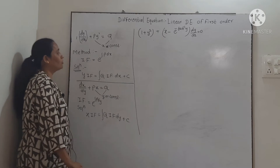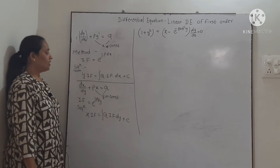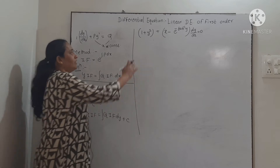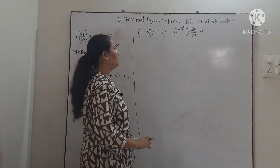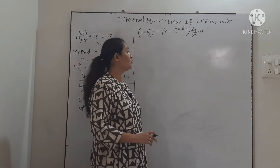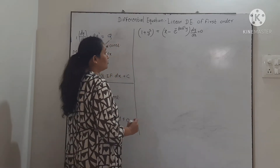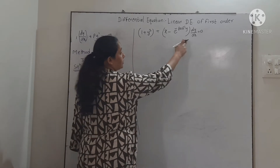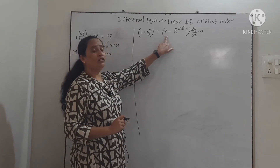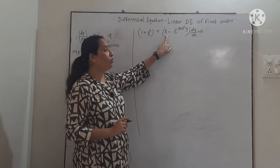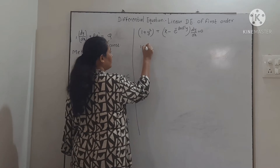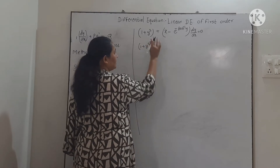This is the procedure to solve a linear differential equation. We will take one example. Consider (1 + y²) + (x − e^(−tan⁻¹y)) dy/dx = 0. Observing this equation, the highest power of x is 1, so we will try to convert this into linear in x. We start with 1 + y² as it is.